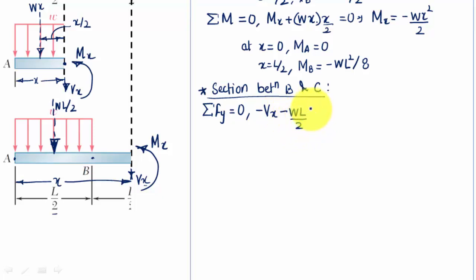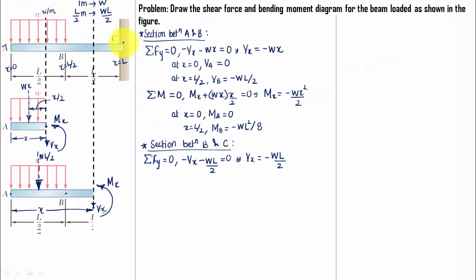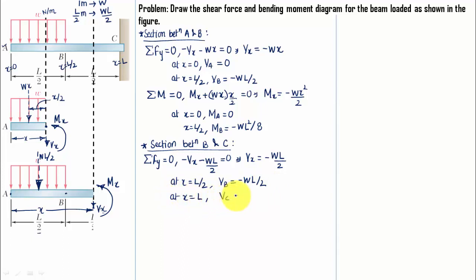So: minus Vx minus W·L/2 equals zero, giving Vx equals negative W·L/2. The shear force between B and C is independent of X, meaning it remains constant at negative W·L/2. At X equals L/2 (point B) shear force is minus W·L/2, and at X equals L (point C) it remains unchanged at minus W·L/2.